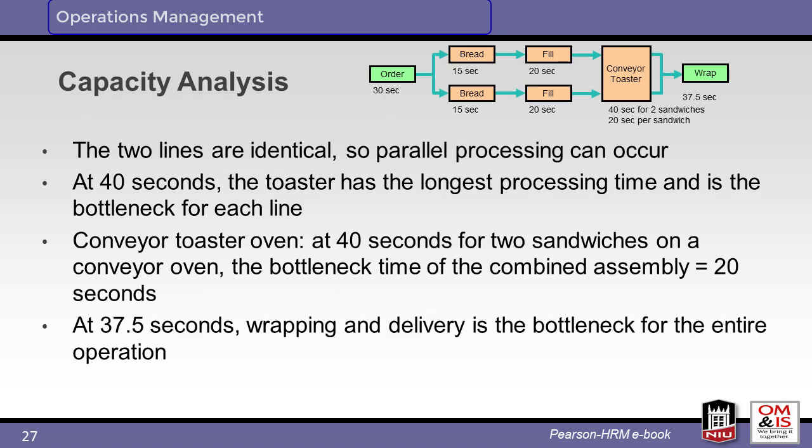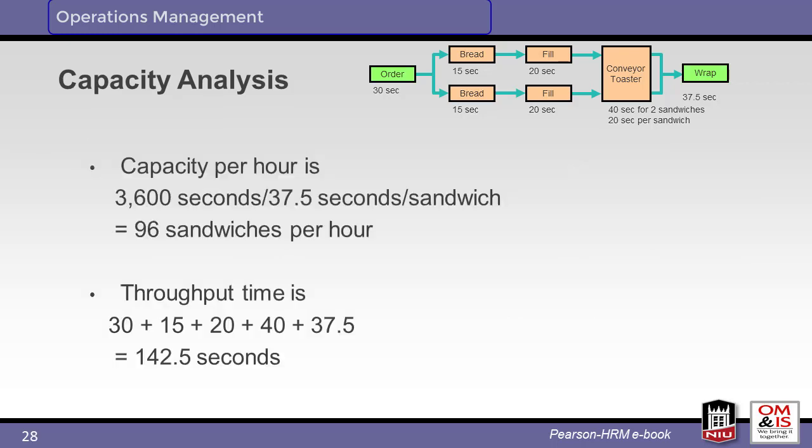The bottleneck is the toaster. By replacing the current manual toasters with a conveyor toaster, we reduce the toasting process to 20 seconds. The bottleneck is now the wrapping station, which would offer our next opportunity for throughput improvement. Analyzing the capacity, we see that with the new conveyor toaster, we can produce 96 sandwiches per hour with a throughput time of 142.5 seconds.